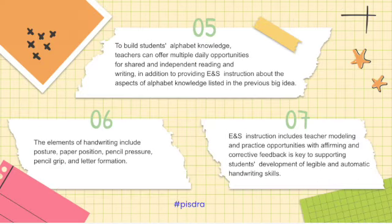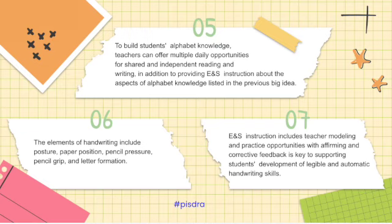The fifth big idea is that to build students' alphabet knowledge, we can offer multiple daily opportunities for shared and independent reading and writing, in addition to providing explicit and systematic instruction about the aspects of alphabet knowledge listed in the previous big idea.